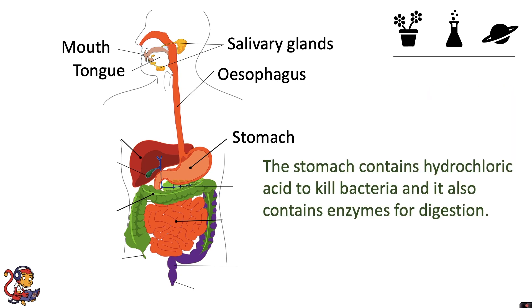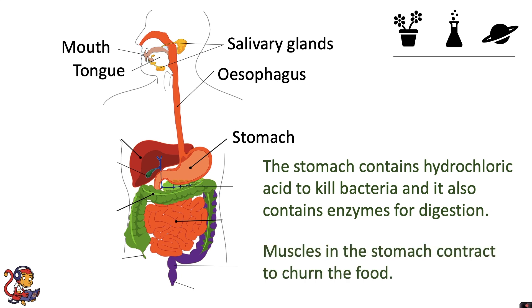The stomach contains hydrochloric acid to kill bacteria and it also contains enzymes for digestion. Muscles in the stomach contract to churn the food.